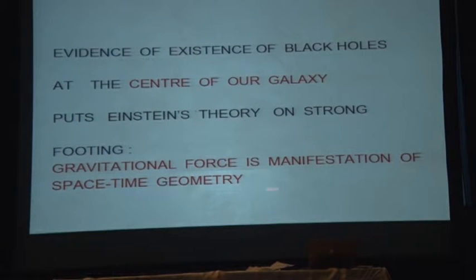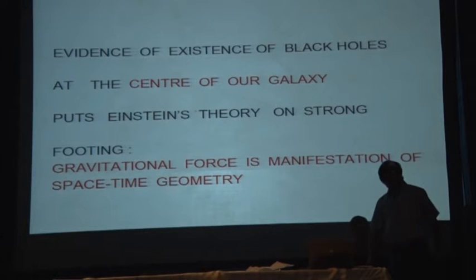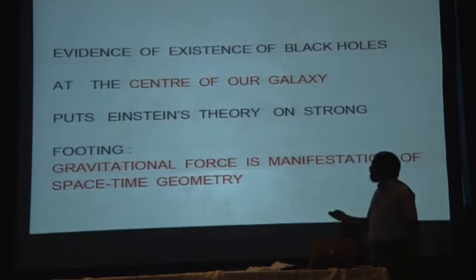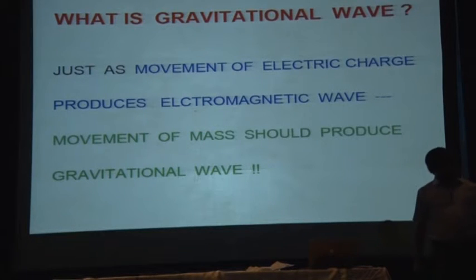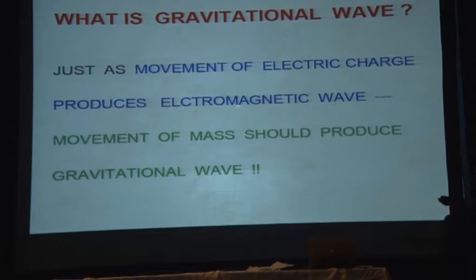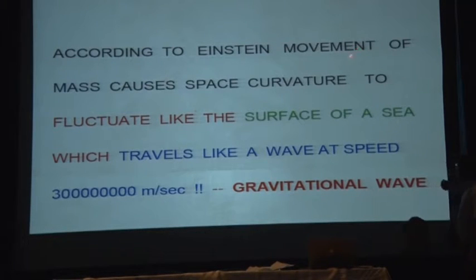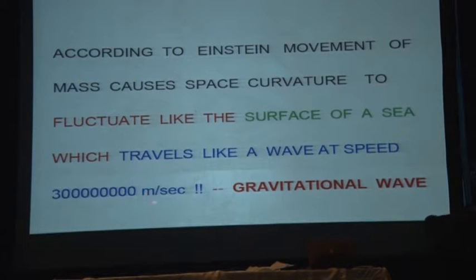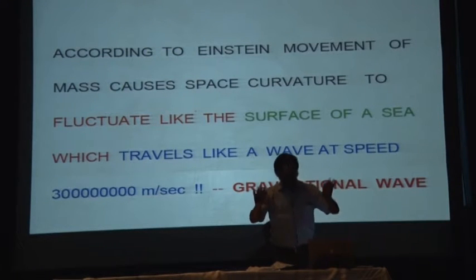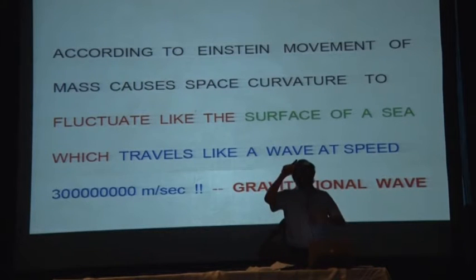Gravitational force is the manifestation of space-time curvature. But there remains one black spot: where is the gravitational wave as predicted by Einstein? Just as movement of electric charge produces electromagnetic waves, movement of mass should produce gravitational waves. If you solve Einstein's equation assuming the mass is moving, you find that the curvature coefficient f₁ satisfies a wave equation, and the velocity of that wave turns out to be the speed of light. According to Einstein's theory, there has to be a gravitational wave.